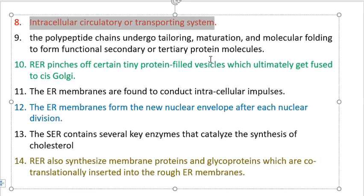The ER acts as an intracellular circulatory and transporting system — a kind of cargo-recruiting system. As a growing secretory polypeptide emerges from the ribosomes of the rough ER, it passes through the RER membrane and accumulates in the lumen of the RER, where polypeptide chains undergo post-translational modifications, maturation, and molecular folding to form functional secondary or tertiary protein molecules. The RER then pinches off protein-filled vesicles which fuse with the cis-Golgi, which then directs the cargo to its destination.